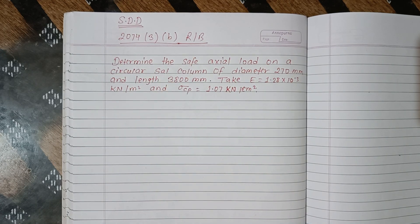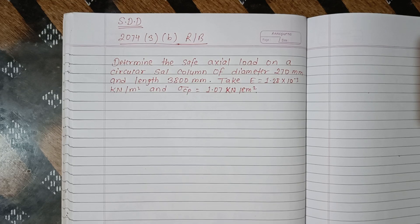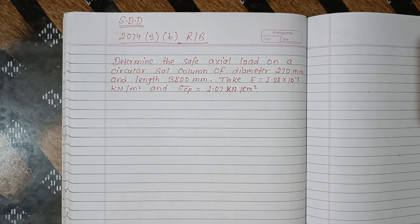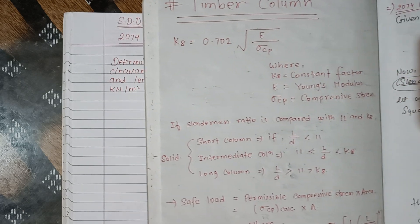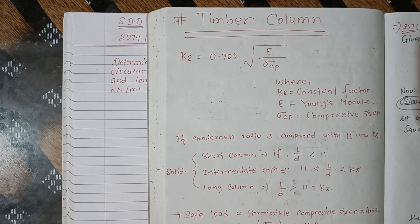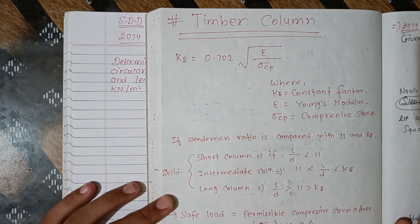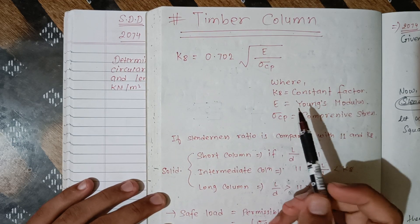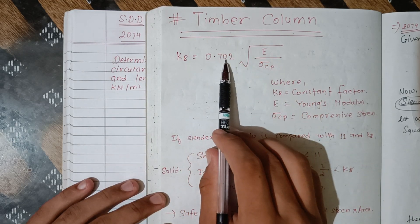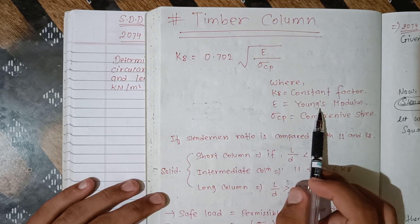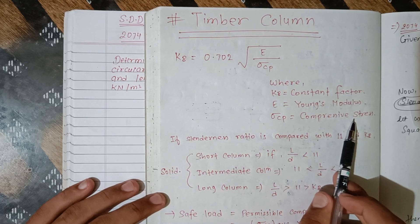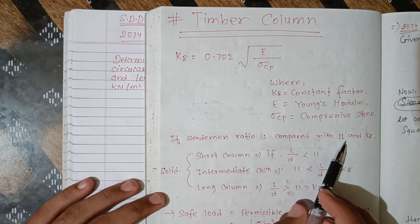We are going to solve a question on columns. I will use the formula: K8 = 0.702 × √(E / σcp), where K8 is a constant factor, E is Young's modulus, and σcp is compressive stress. If the slenderness ratio is compared with 11 and K8...